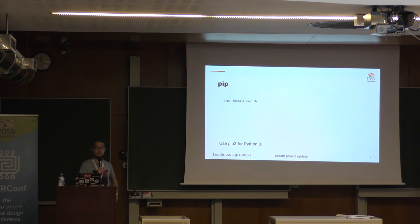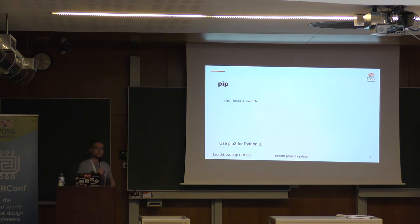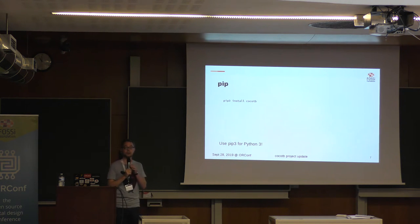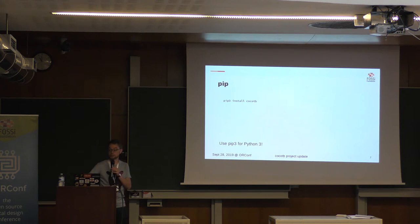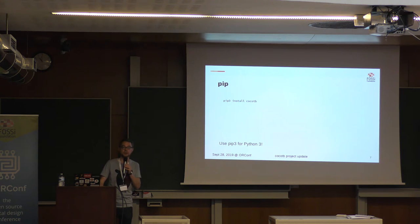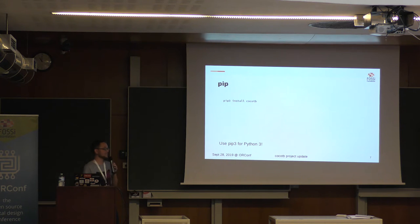One of the most sought-after features in CocoTB 1.2 is the ability to install CocoTB just like a normal Python package using pip. So you do 'pip install cocotb' and that's it — you don't need to download the Git repository anymore. That's a major step forward in terms of usability that many people have been waiting for. The question is, why is that so tricky? If you've ever written a Python package, making it installable by pip is pretty trivial. For CocoTB, it wasn't that trivial, and we'll see in a couple more slides why CocoTB is a bit special.